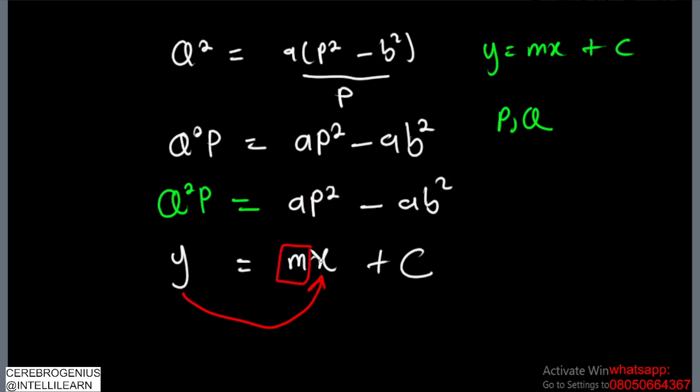And the coefficient of your x will be your slope. So that means that your a is going to be the slope. And your intercept is going to be the remaining part. So that means our intercept is going to be minus a b squared.